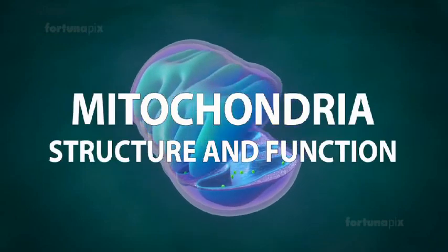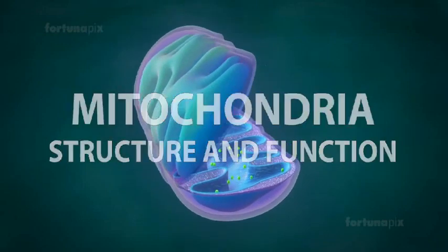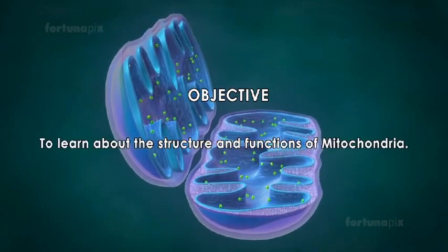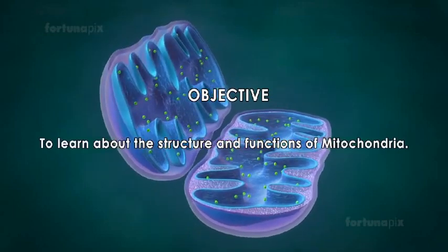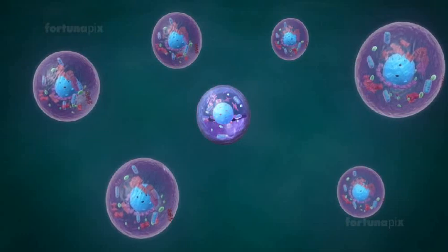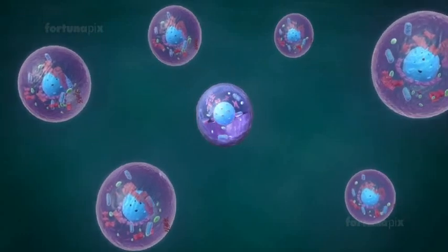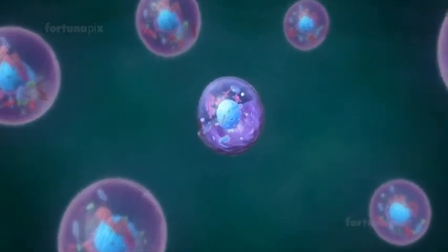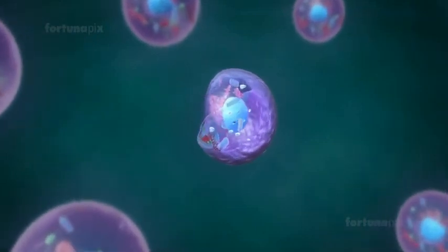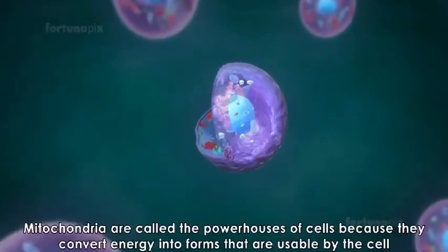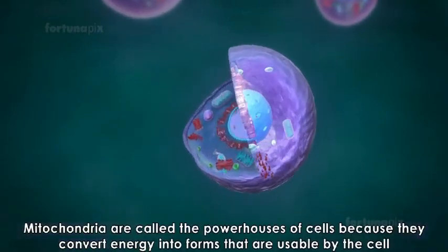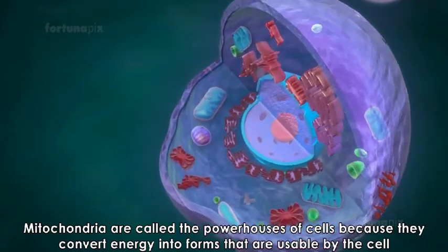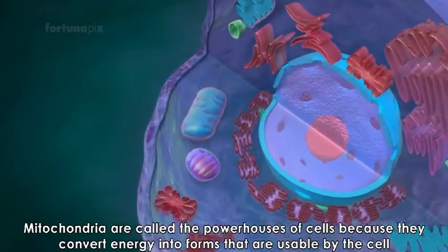Mitochondria structure and function: objective to learn about the structure and functions of mitochondria. Mitochondria are located in the cytoplasm of cells and are among the largest cell organelles. They are called powerhouses of cells because they convert energy into forms that are usable by the cell.